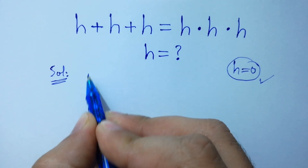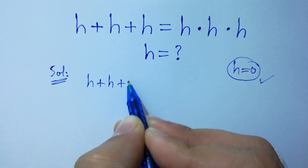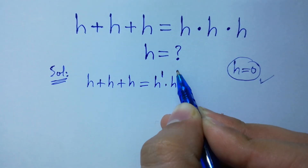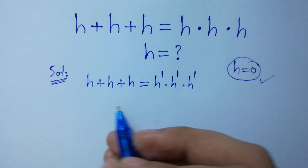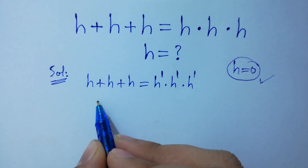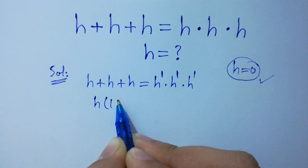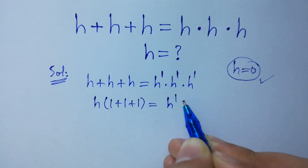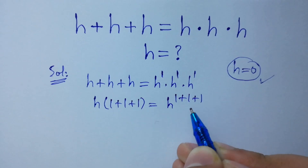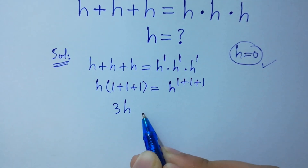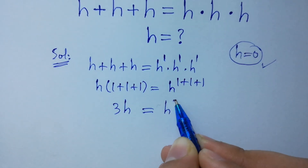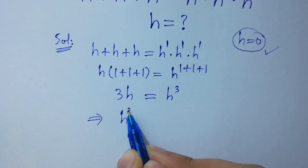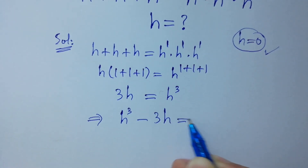We have h plus h plus h equal to h to the power 1 times h to the power 1 times h to the power 1. Taking h common on the left side, we have h times (1 plus 1 plus 1), and on the right side h to the power (1 plus 1 plus 1). We get 3h equal to h cubed, which is the same as h cubed minus 3h equal to 0.